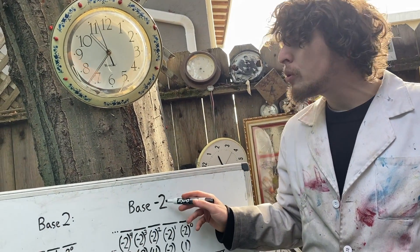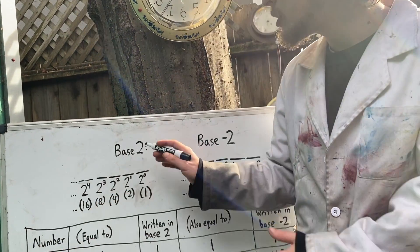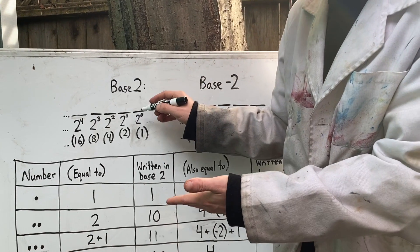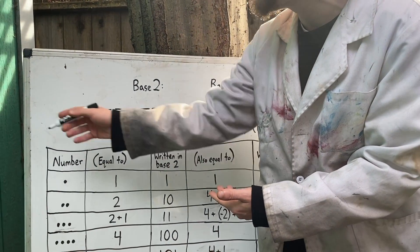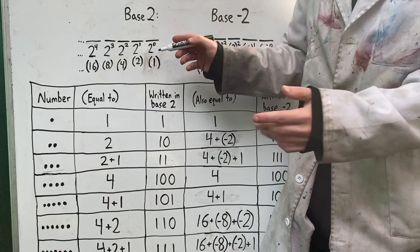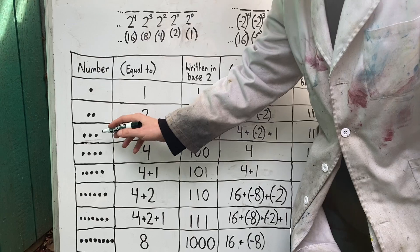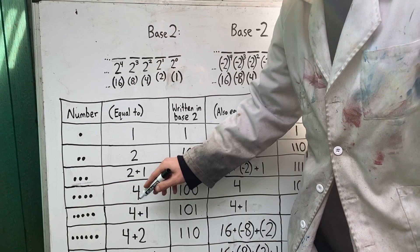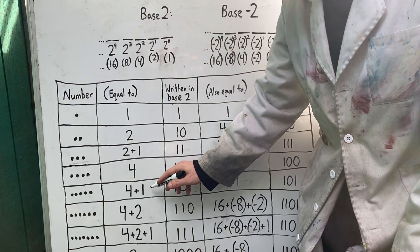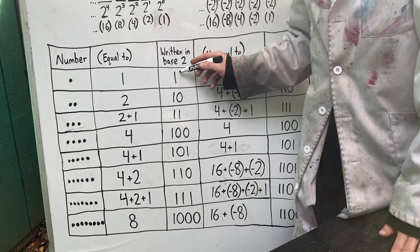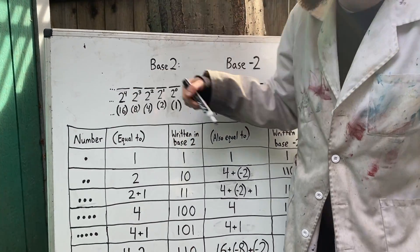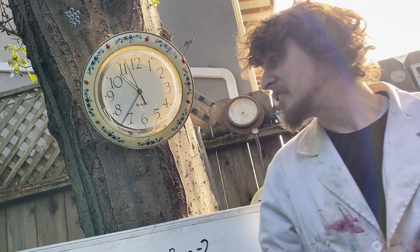To see what negative bases can do, let's start with base negative 2 and its similarities and differences to base 2, or binary. In base 2, each place represents how many of a given power of two we have. Starting from two to the zeroth power, which is one, we have all these tools in our infinite toolkit — the powers of two. It turns out we can make any integer just by using up to one of each of these tools. If I want to make three, I take a two and a one; for four, just a four; for five, a four and a one. That translates into writing ones where we used that tool and zeros where we didn't.